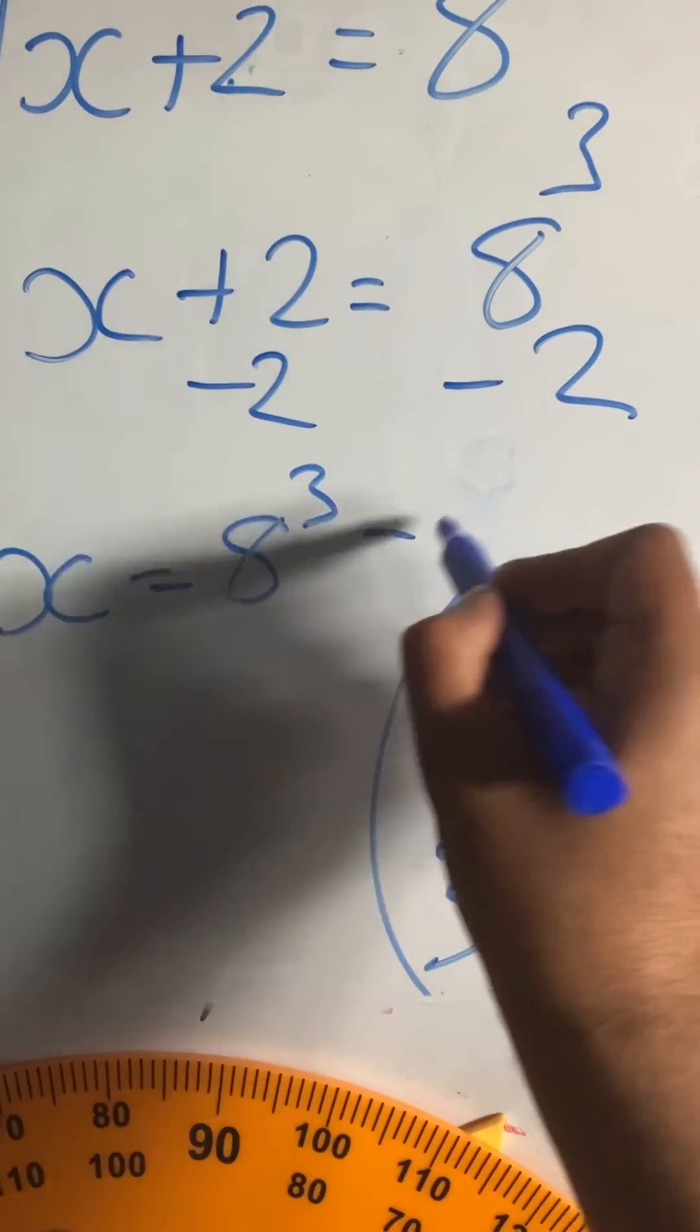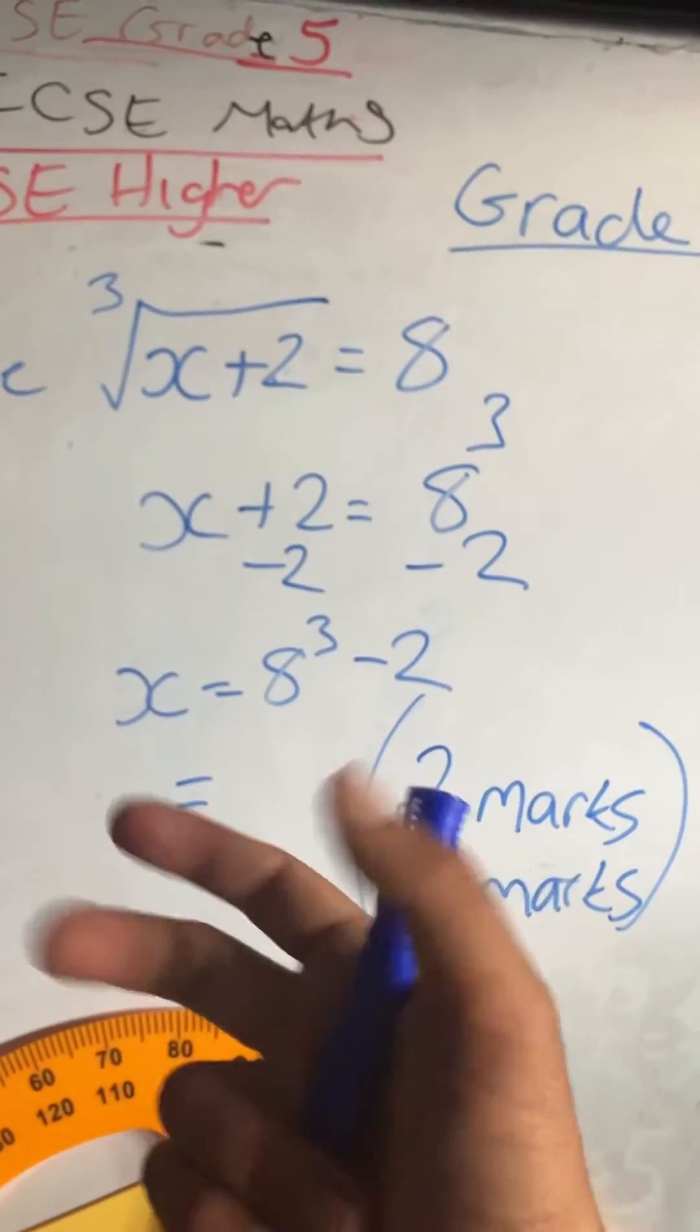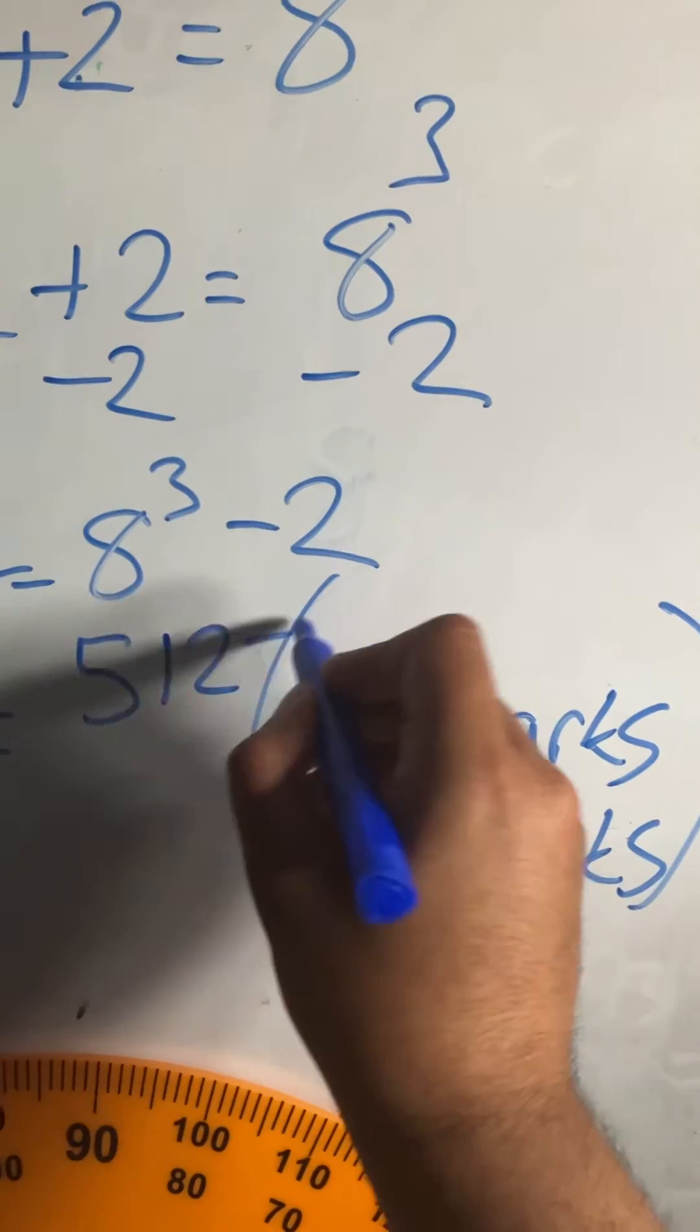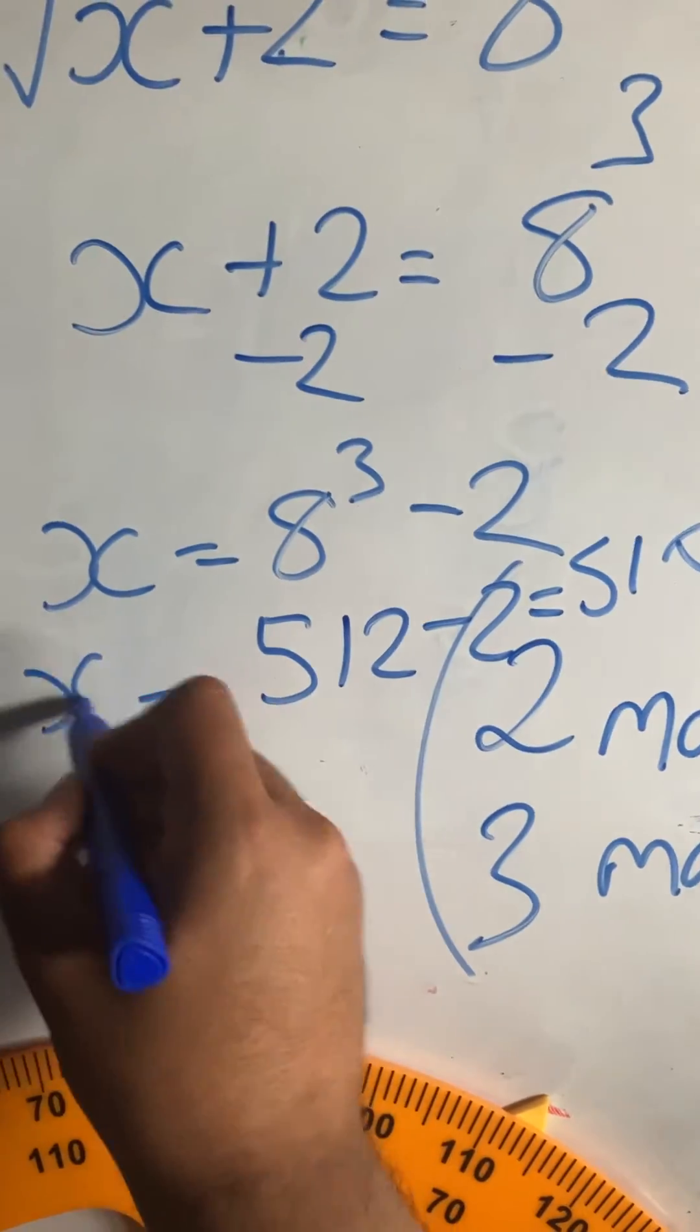Now 8 cubed is a bit more of a tricky one. It's 8 times 8 times 8, which is actually 512. Subtract 2 and that will equal 510, so x is equal to 510. That's my solution to this equation.